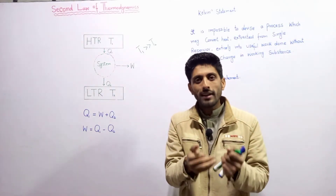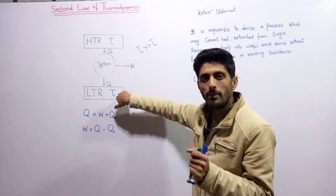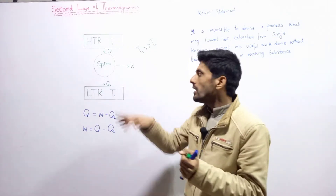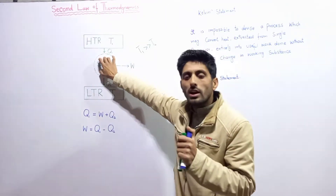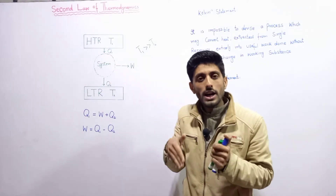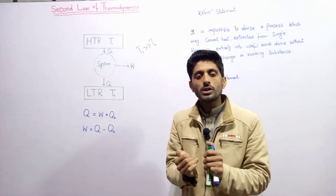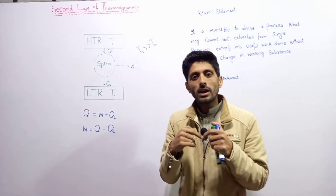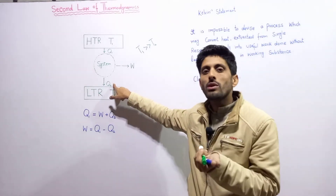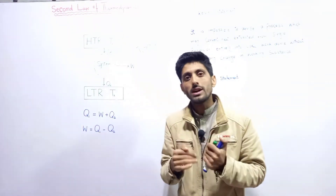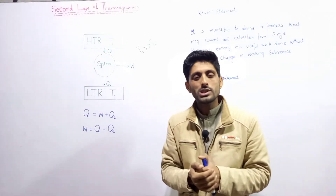For heat to flow, there must be a temperature difference between the two bodies. The hot body has a higher temperature and the cold body has a lower temperature, so heat flows from hot to cold — from high to low temperature. The temperatures are T1 and T2 respectively. When heat flows from source to sink, a system placed between them uses that heat energy, converting some part into work done while the remaining is expelled.